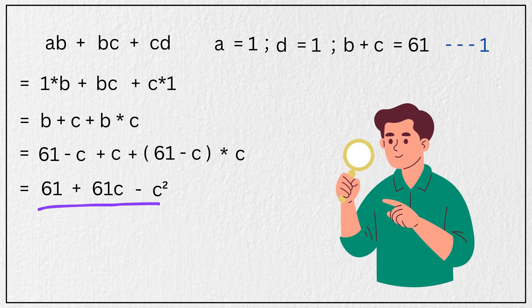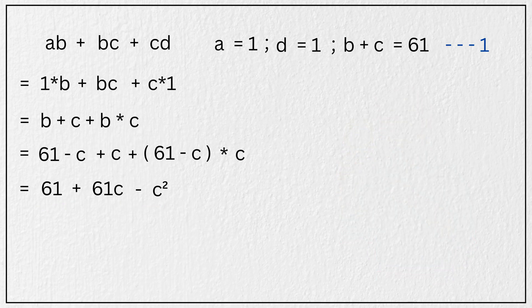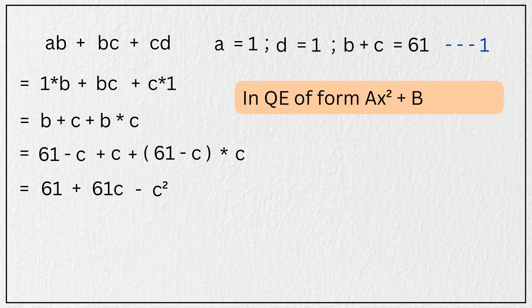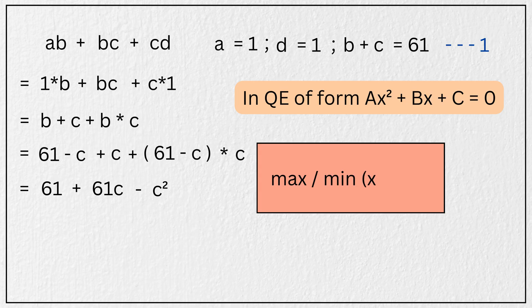Did you notice something? This is a quadratic expression in C, and we know that the maximum value of a quadratic happens at the vertex. In any quadratic equation of the form AX squared plus BX plus C, the maximum or minimum value happens when X equals negative B divided by 2A.